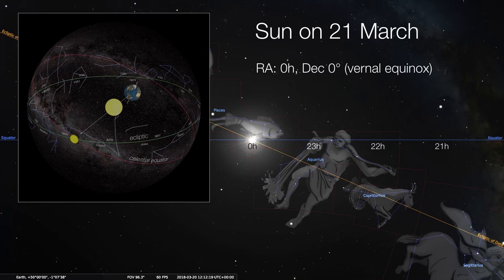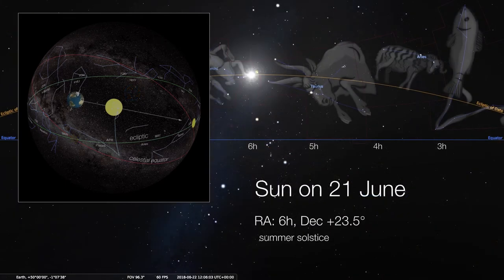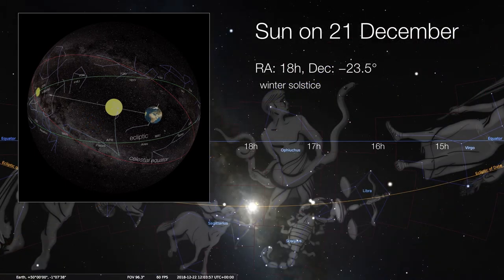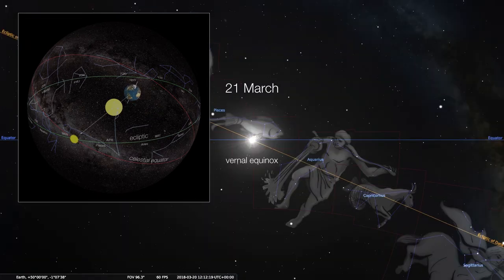The sun has a declination of zero degrees, right on the equator. Three months later, on June 21st, the sun has reached six hours of right ascension, and its declination is about 23.5 degrees north — a positive value. In the northern hemisphere, we call this the summer solstice. Three months after that, the sun has moved to 12 hours of right ascension, opposite the vernal equinox, back to a declination of zero for the autumn equinox. Then around December 21st, the sun is south of the celestial equator with a declination of negative 23.5 degrees, and we're at 18 hours for the winter solstice, before returning to the vernal equinox the following year.